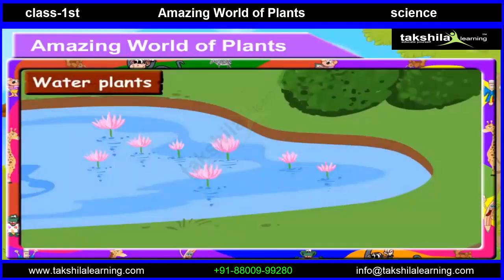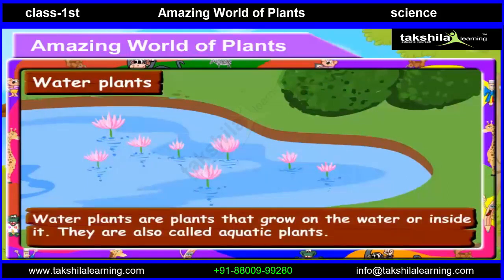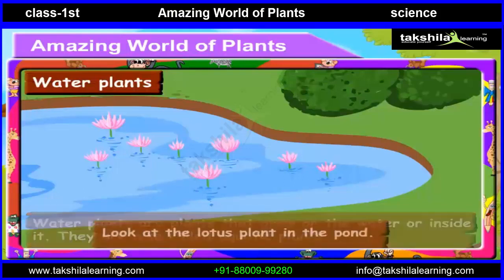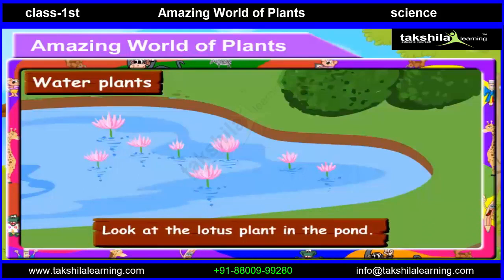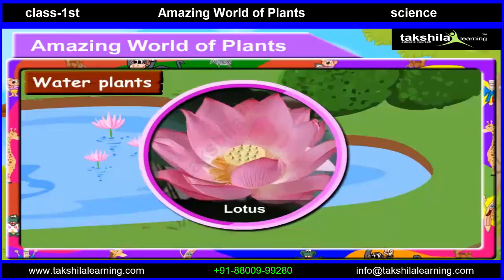Let us understand the world of water plants. Water plants are plants that grow on the water or inside it. They are also called aquatic plants. Look at the lotus plant in the pond — see how beautiful it is. It is an example of a water plant.